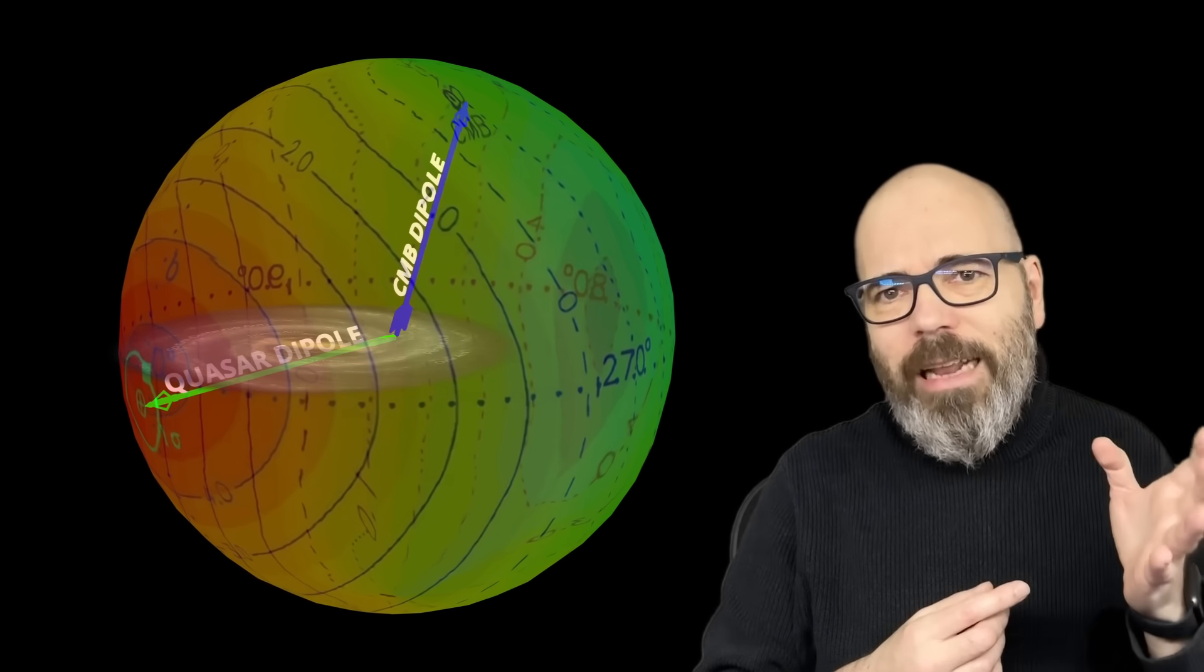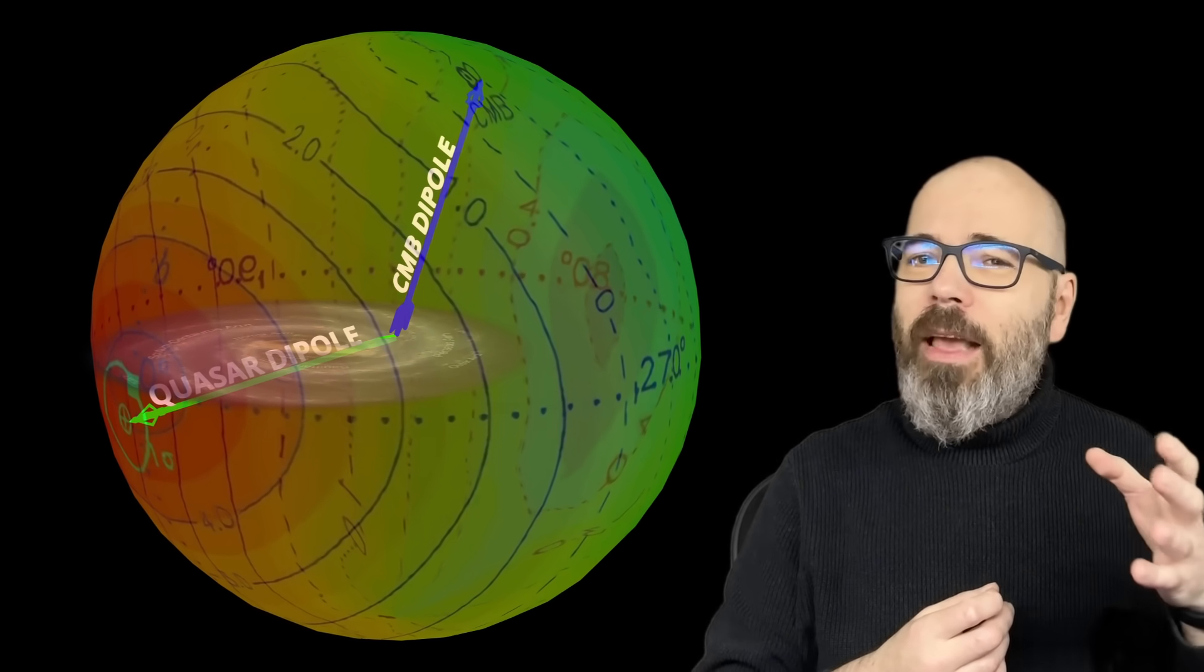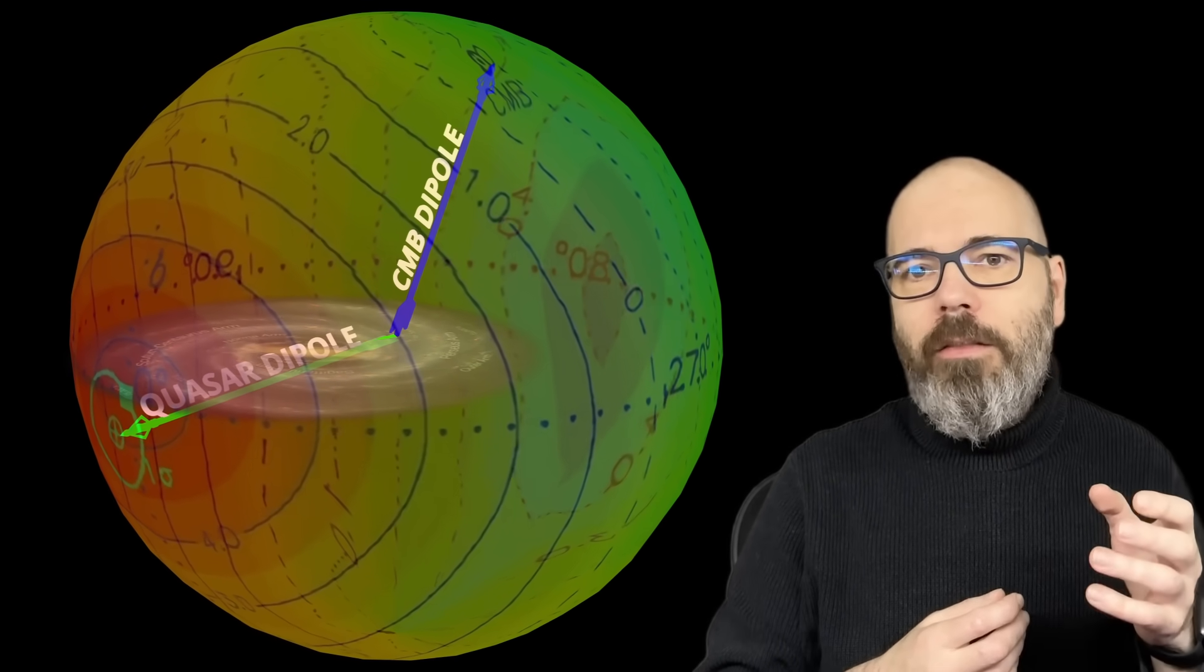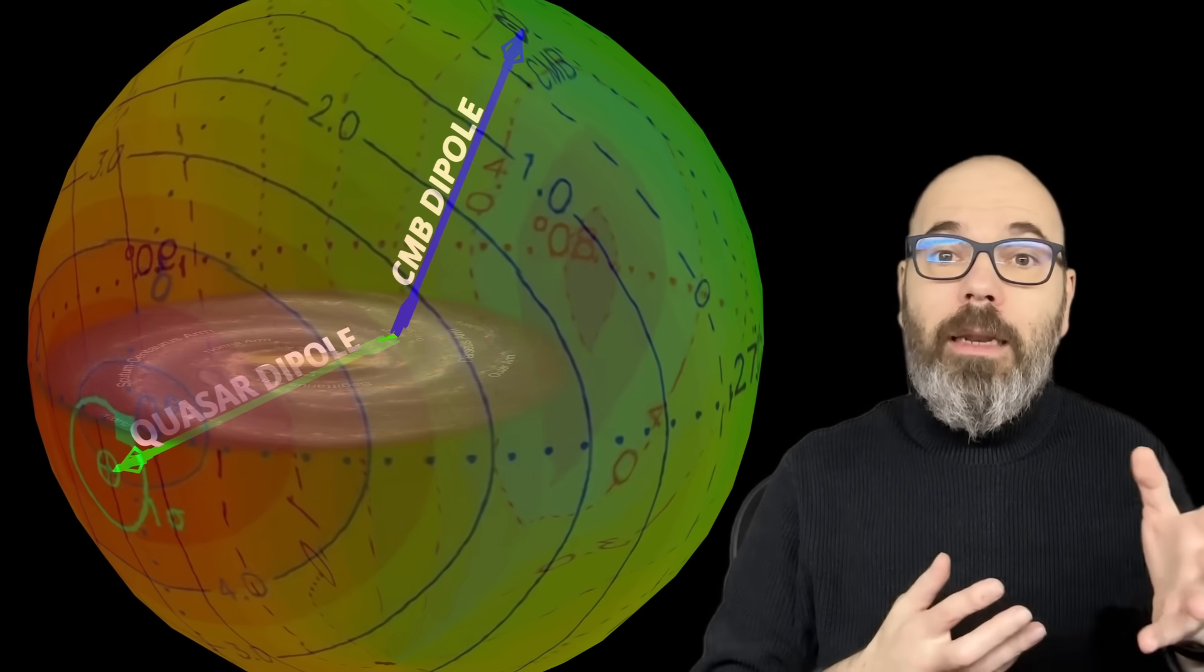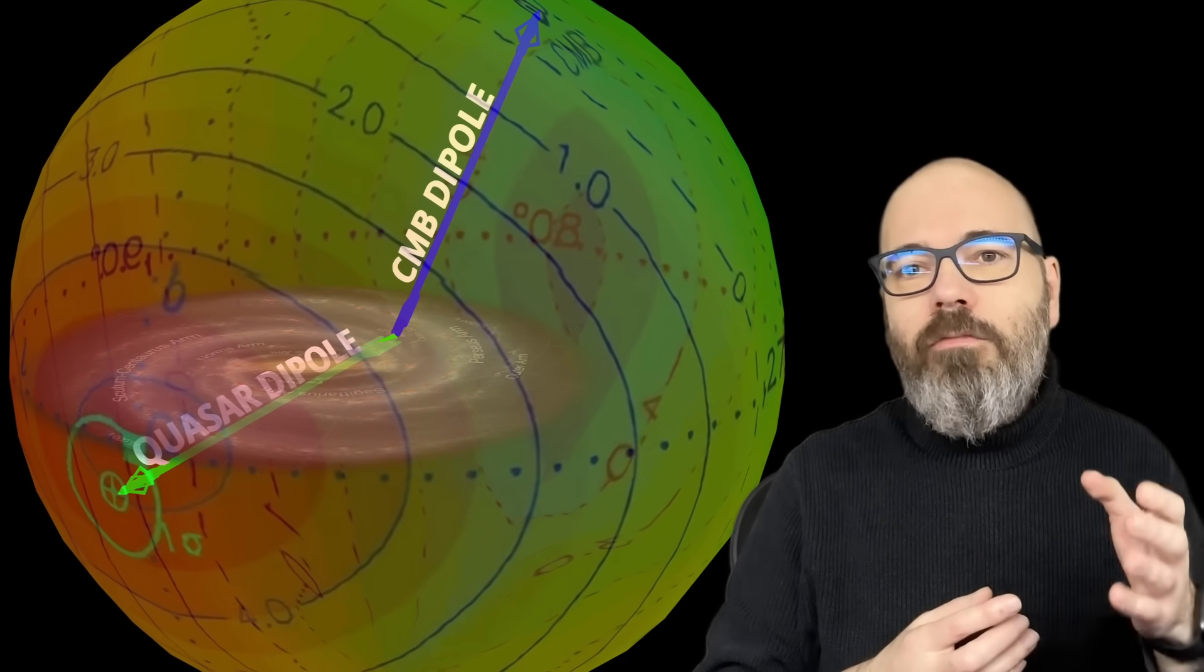It's almost exactly 90 degrees away from the CMB dipole, and instead points straight down the center of our own galaxy. That's not where we should be moving, at least not if the CMB is really telling the truth.